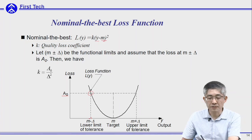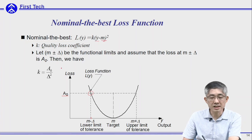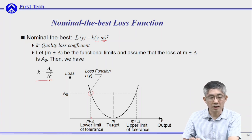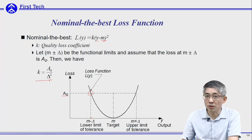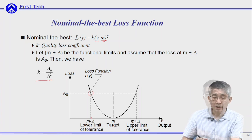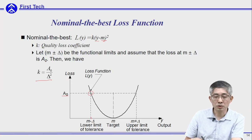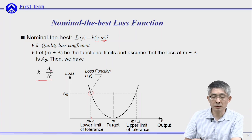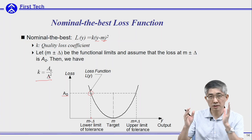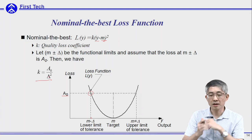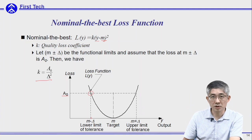By substituting the value into this equation, you can easily find the quality loss coefficient. K will be equal to the loss A₀ from the previous criteria divided by Δ², where Δ is the tolerance of your specification.